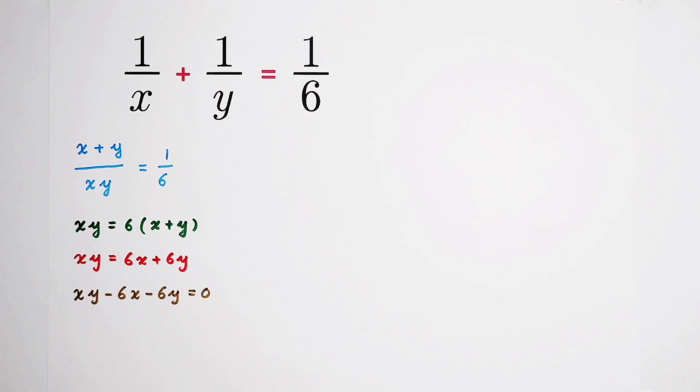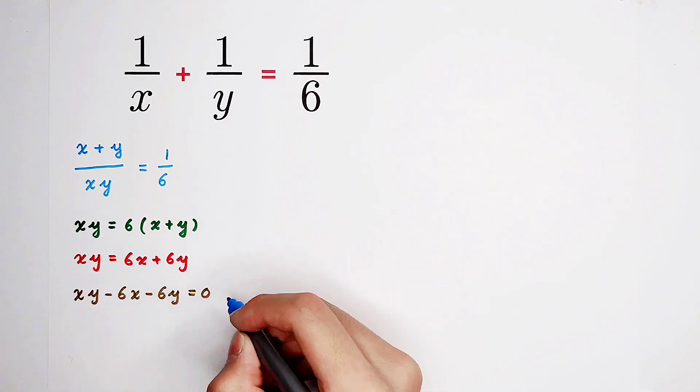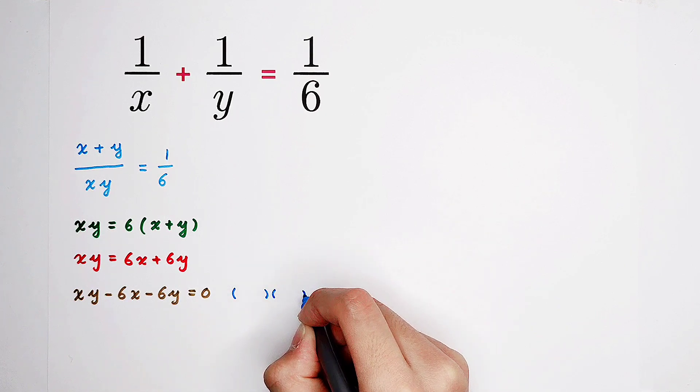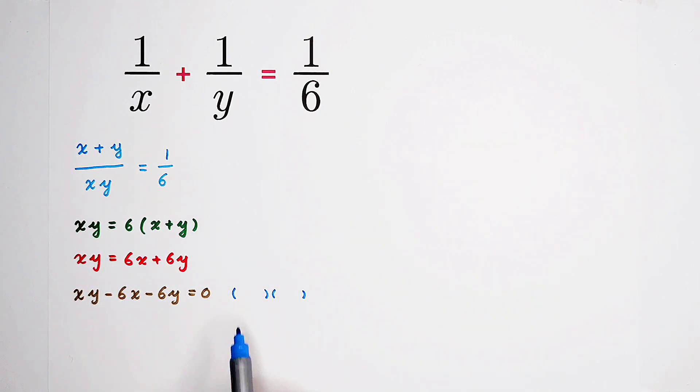However, now, we made a problem. Which problem? Usually, we hope that the left-hand side can be written as a product of two terms. That means it can be factorized.